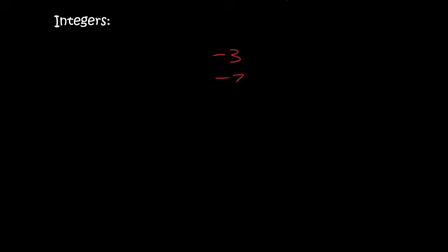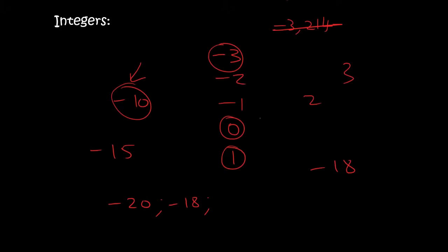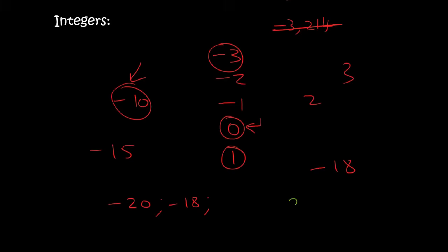Okay guys, so integers are numbers like these that you can see on your screen. They are complete numbers, you see? They don't have any funny decimals like 3,214. That is not an integer. They are all the complete numbers — they include negatives, they include zero, and they include positives. It just mustn't be any weird things with decimals, like 3,8,2. None of those.